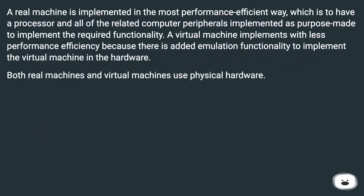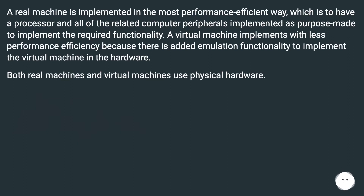A real machine is implemented in the most performance-efficient way, having a processor and all related computer peripherals purpose-made to implement the required functionality. A virtual machine implements with less performance efficiency because there is added emulation functionality to implement the virtual machine in hardware. Both real machines and virtual machines use physical hardware.